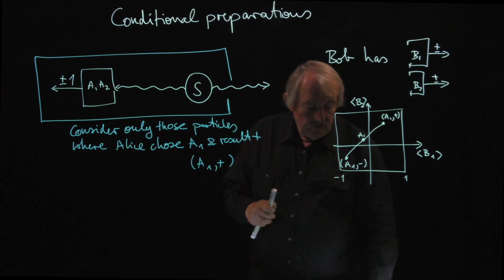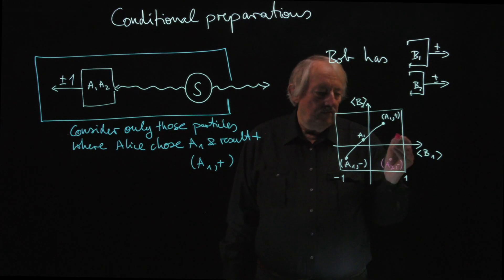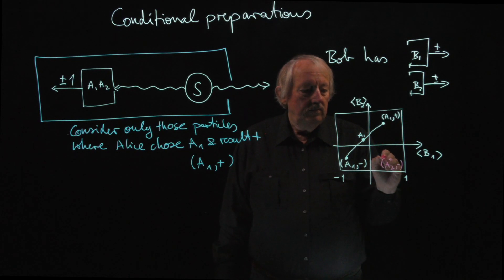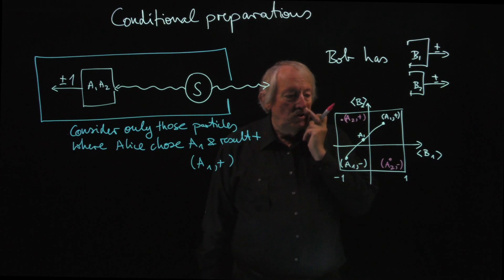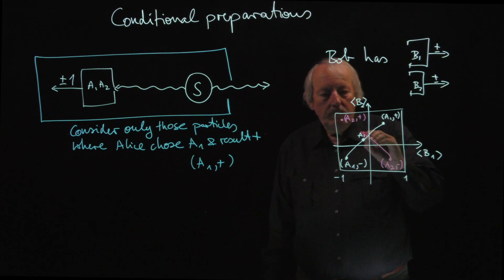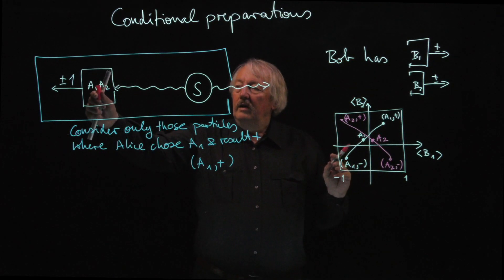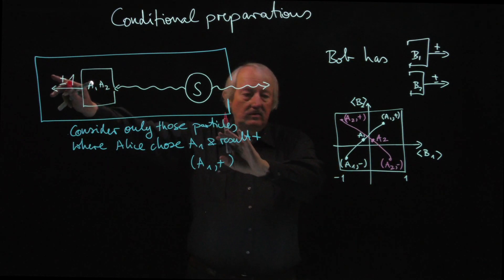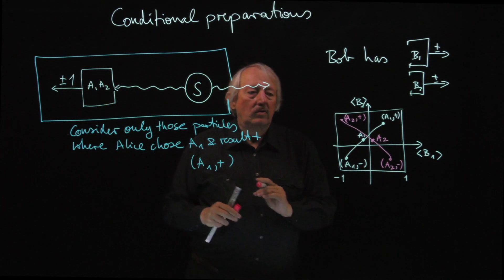Of course, she can do something else. She can do a2. And let's say this is the point a2 minus or so. It doesn't really matter now. And there would be another one. I'll put it here. That would be a2 plus. Another conditional preparation. And there is also a point that we could call a2. This is the one that you get when Alice does a2, but the statistic is not separated according to her result, only according to what she measured.